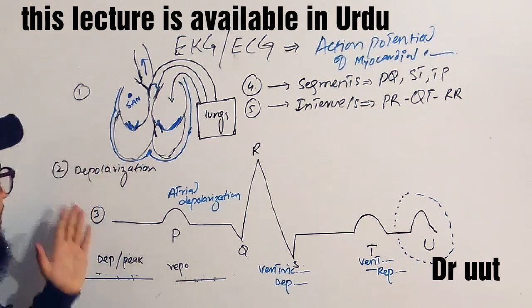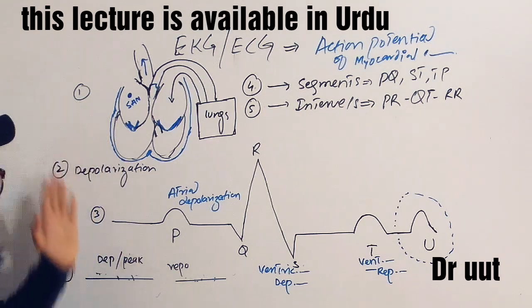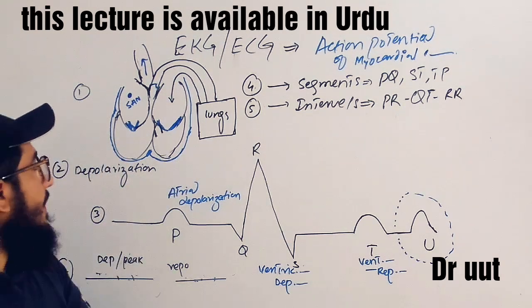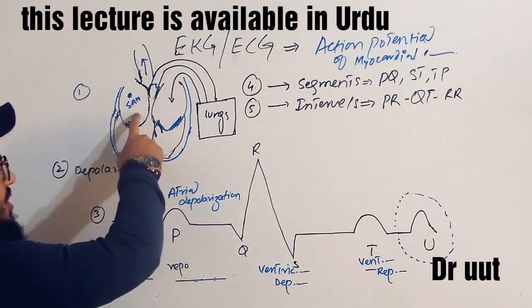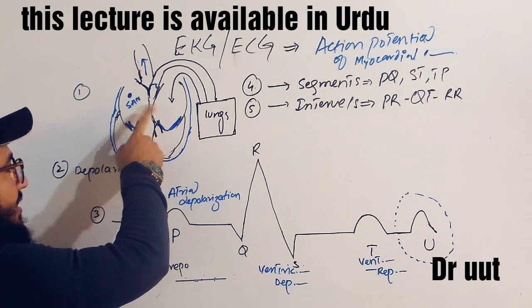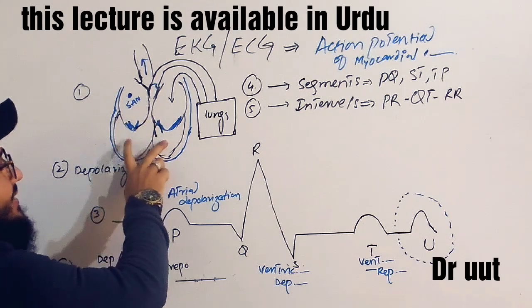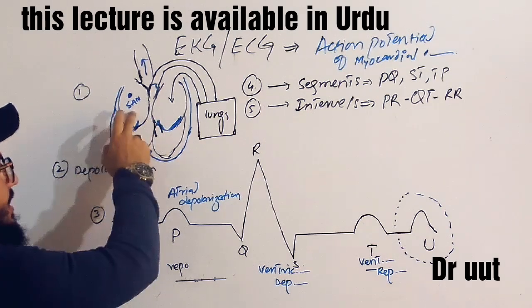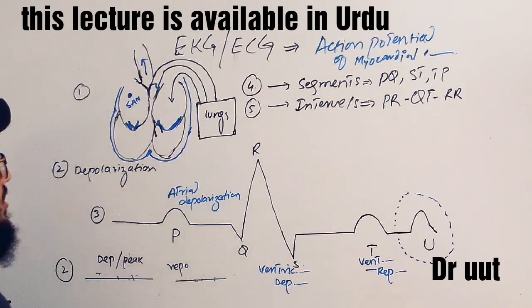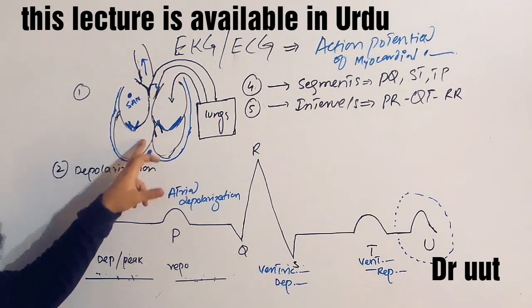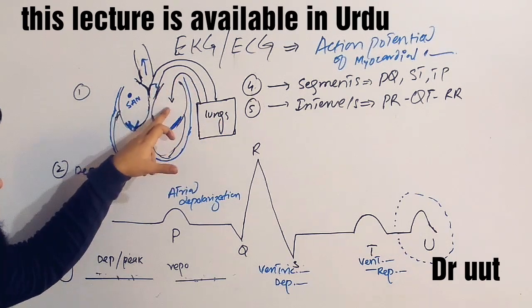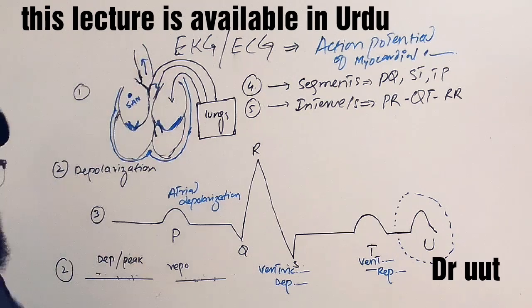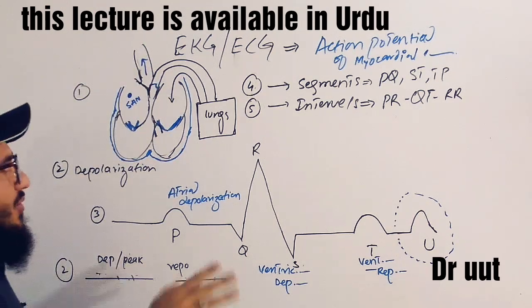Coming to the points, numbered 1 through 6. First of all, we must know a little about the heart: the atria are the upper chambers and the ventricles are the lower chambers. The atria will contract, then the ventricles, and the blood will be pumped to the lungs, from the lungs to the atria, then to the ventricles, then to the whole system.